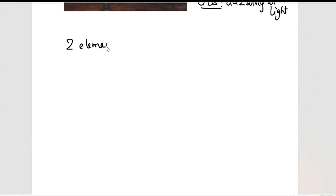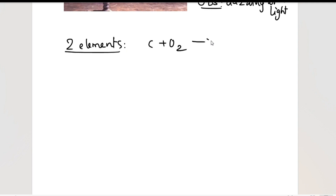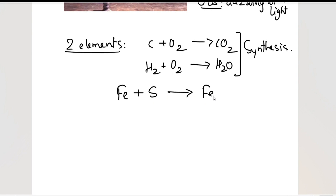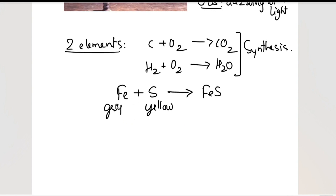Let me give more examples of combination reactions. Combination can be between two elements — like carbon and oxygen giving carbon dioxide, or hydrogen and oxygen giving water. When combination occurs between two elements, it is also known as a synthesis reaction. Another example: iron reacts with sulfur to form ferrous sulfide. Sulfur is a yellow powder, iron is a gray metal, and ferrous sulfide is black in color.